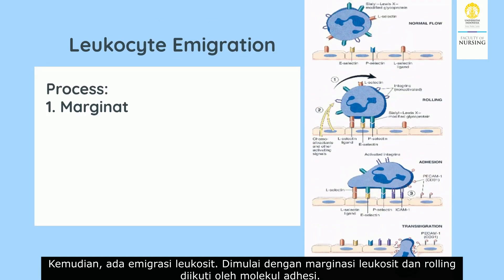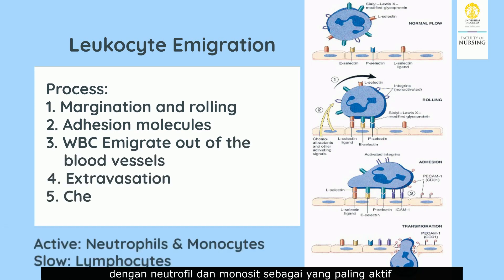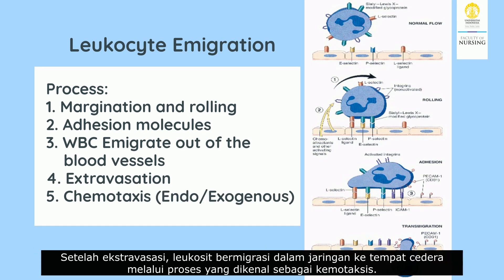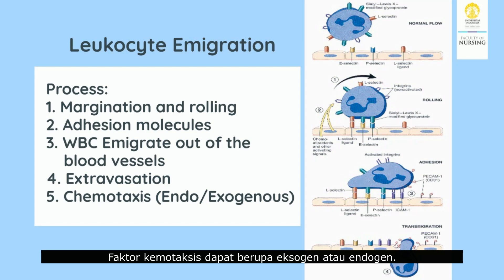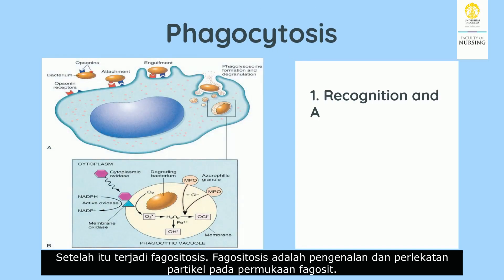Next is leukocyte emigration, which begins with leukocytic margination and rolling, followed by adhesion molecules. All types of white blood cells emigrate out of the blood vessels, with neutrophils and monocytes being the most active and lymphocytes the slowest. After extravasation, leukocytes migrate through the tissue to the injured site by a process known as chemotaxis. Chemotaxis factors can be either exogenous or endogenous.